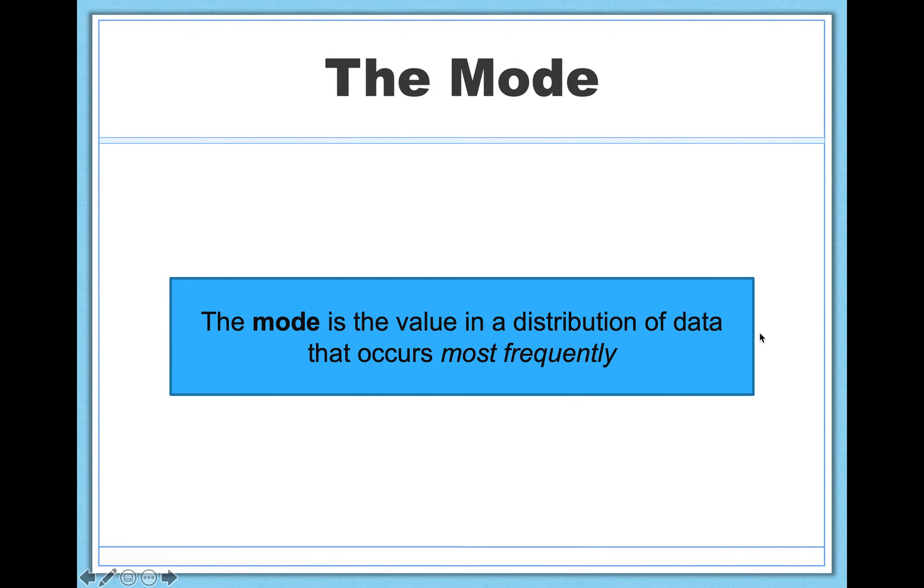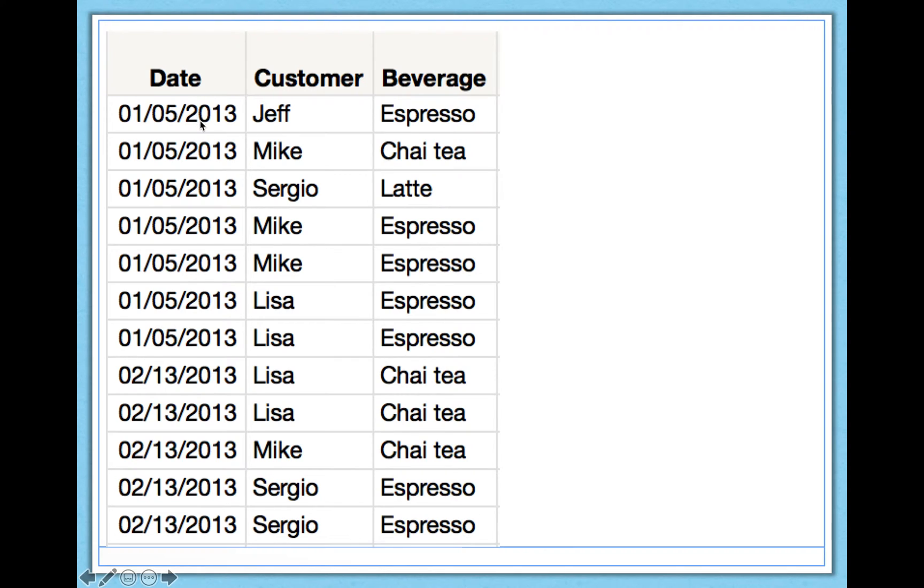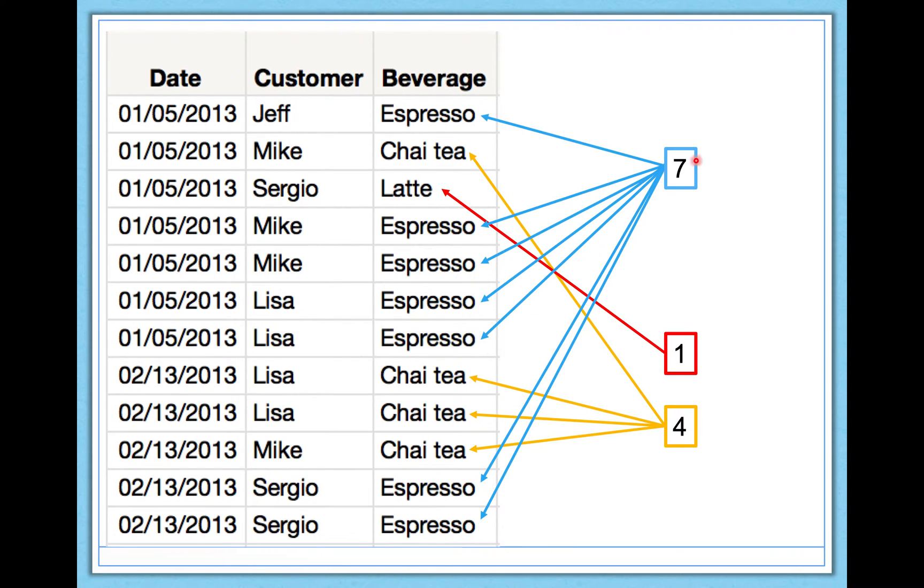And finally, we have the mode. Now, the mode is an average, just like the others, but it's an average of a very different nature. In fact, it's the value in a distribution of data that occurs most frequently. So it's very different than the rest. But the beauty of the mode is that you can calculate it even if you don't have numbers in your data set. So let me illustrate. Here's a data set where we have basically beverage orders being described here. So we have date, we have customer name, and we have the beverages that each customer ordered. And we can calculate the mode. You can do it informally now. What's the most common value, per se, in this data set? Well, we have chai teas ordered four times, a latte was ordered only once, and espressos were ordered seven times. So in this case, seven is the most common value. So espresso is the mode of this variable, of this data set here. So it's really powerful to have that flexibility.